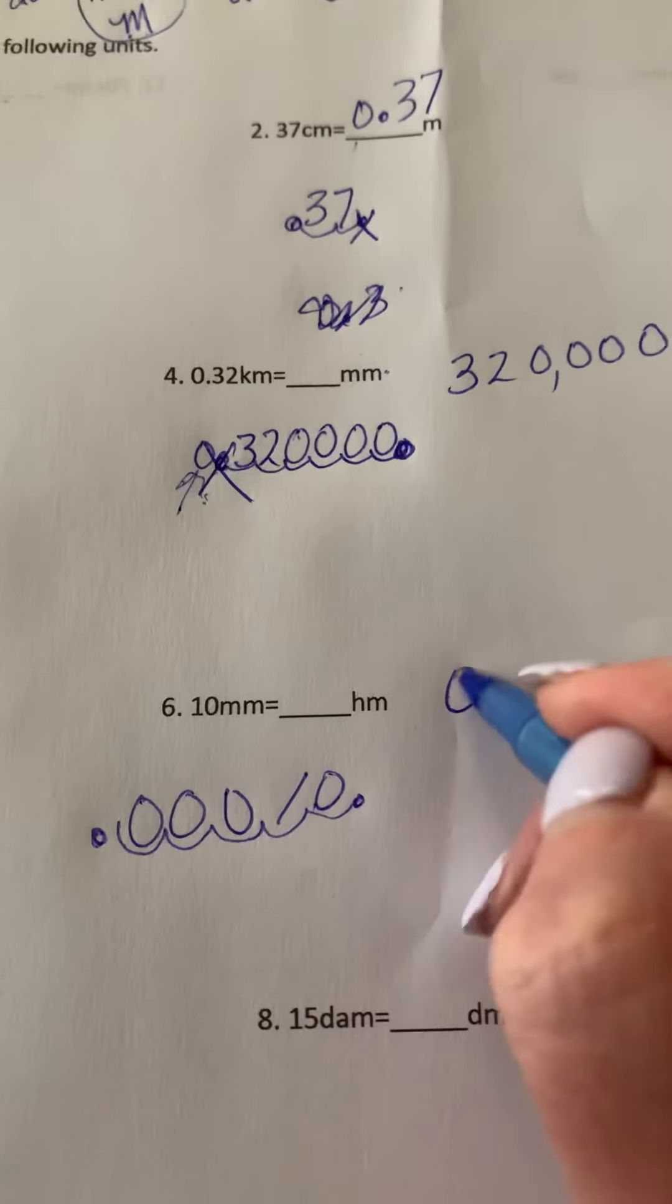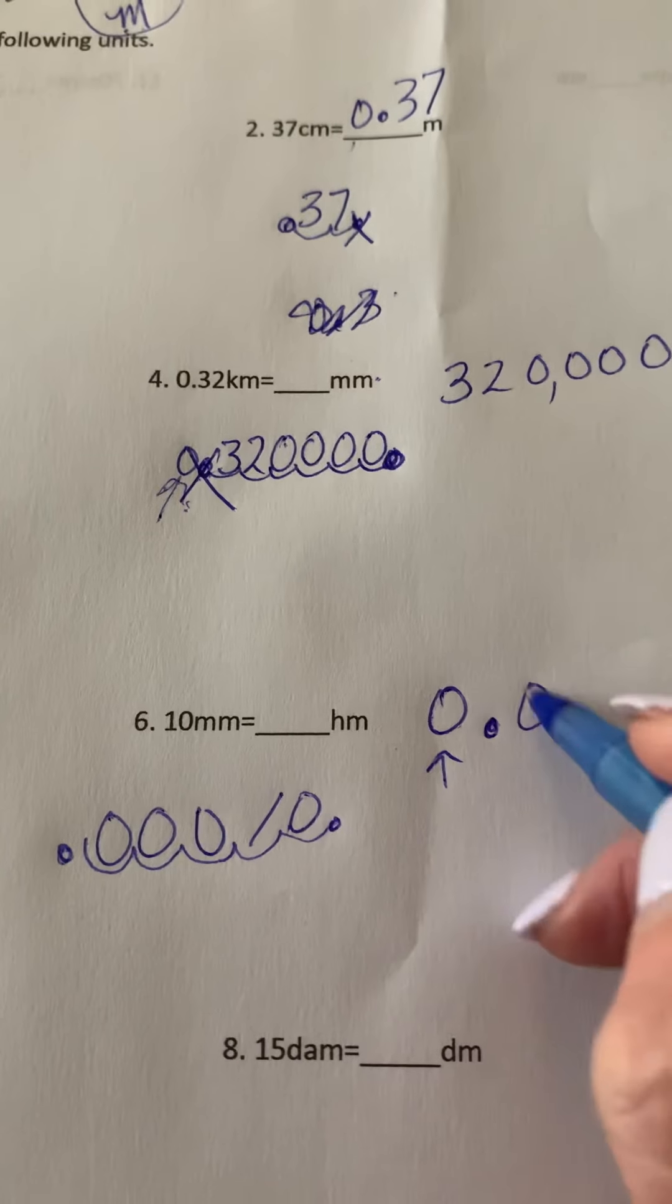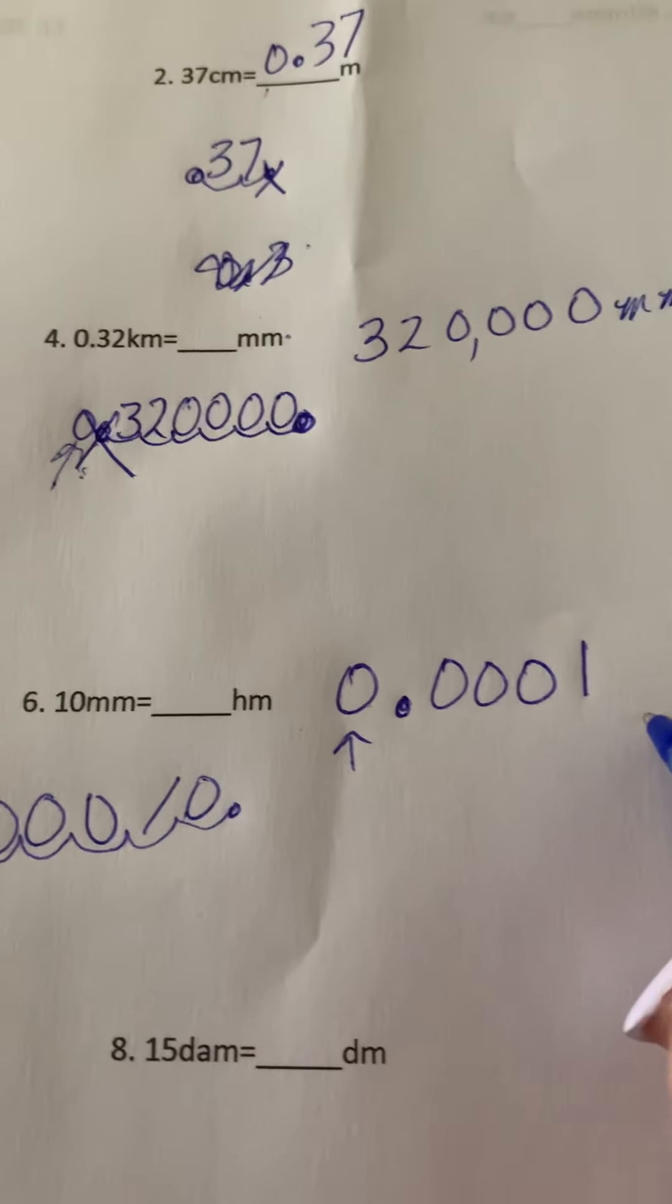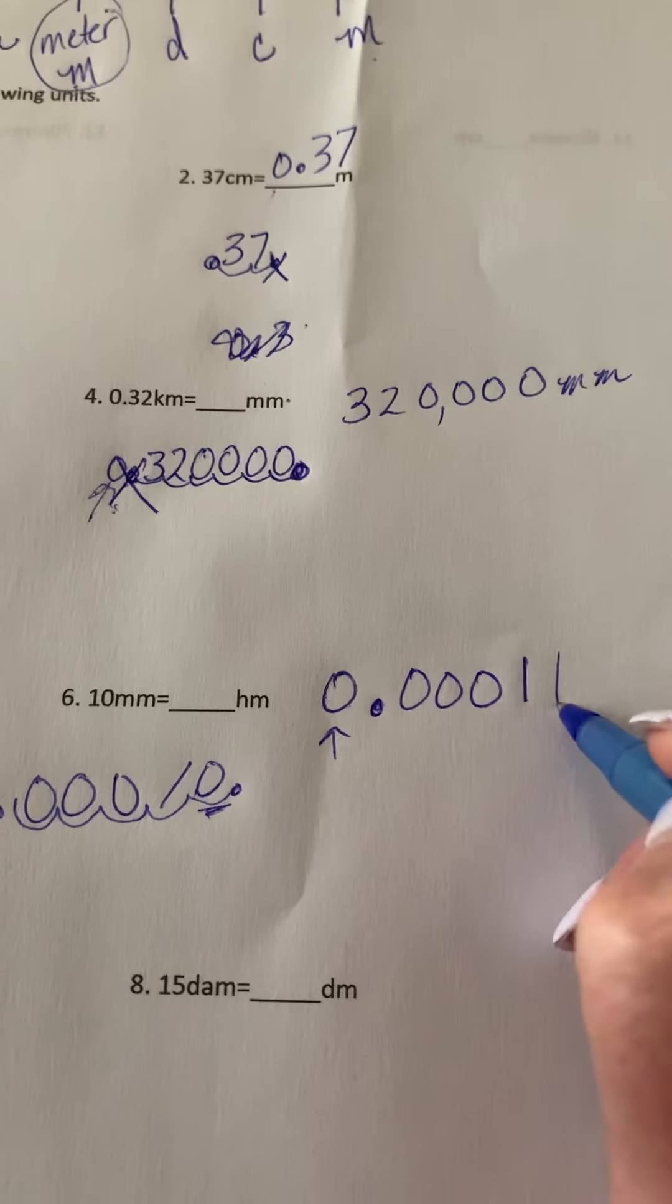Now in science, they would always make you put a zero out in front. 0.0001 hectometers. And again, this one behind here would be redundant. We would have one ten-thousandth of a hectometer.